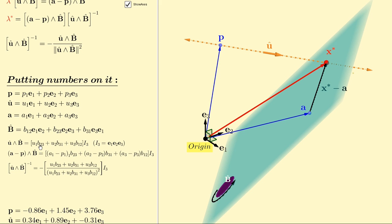u hat wedged with b hat is a scalar multiple of i3, which is a unit trivector for three-dimensional geometric algebra.